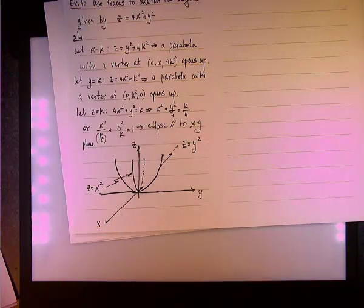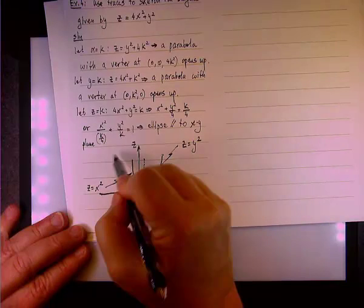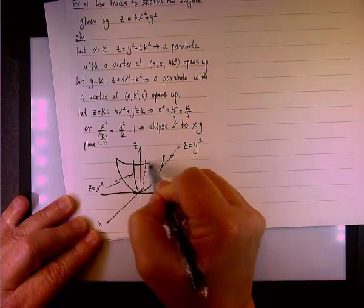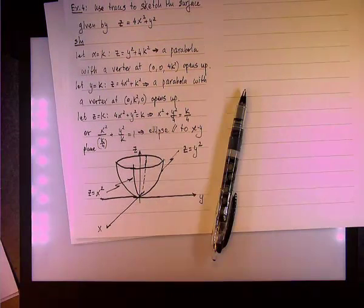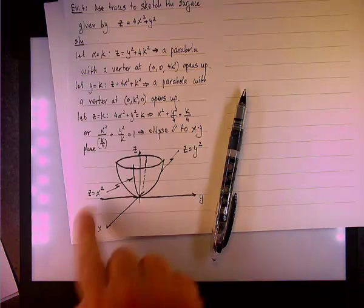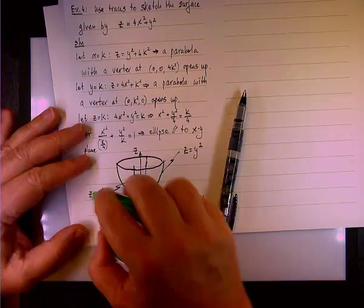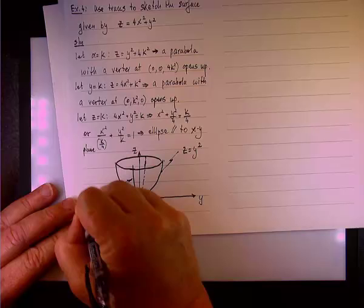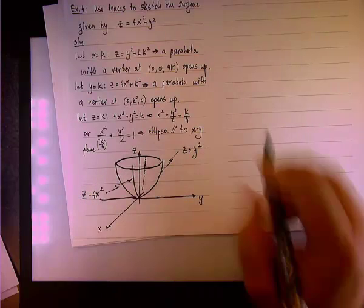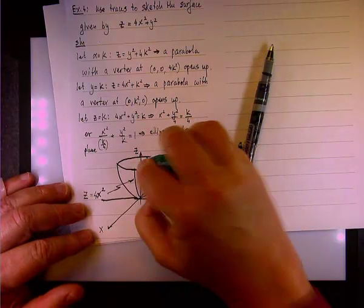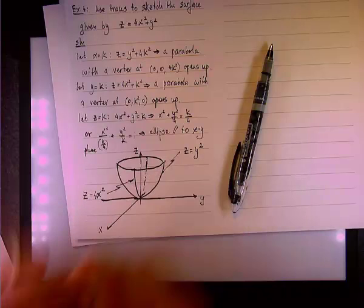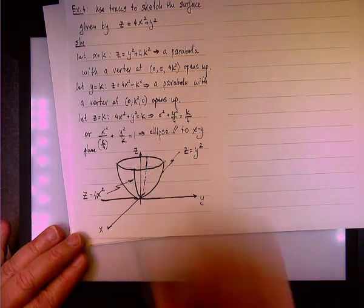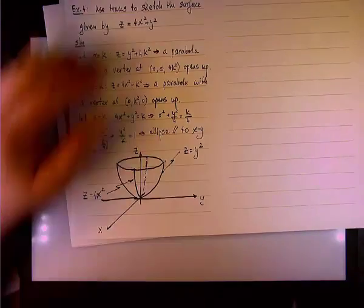Let me mark it right here. This will be the parabola z equals 4x squared. Now, what's left is to deal with the ellipse. The ellipse is on a plane parallel to the xy plane. Of course, we're going to put it on top right there. So, here's the ellipse. Thank you, Roberto. And now, here's the parabola.